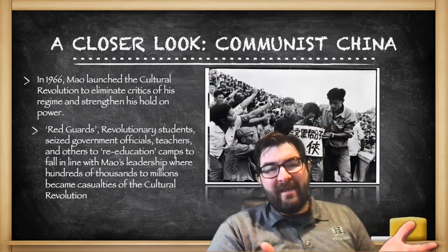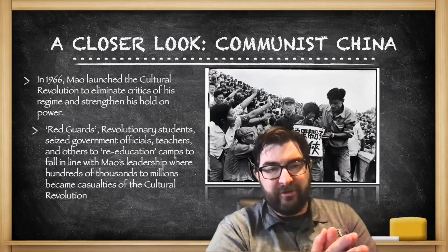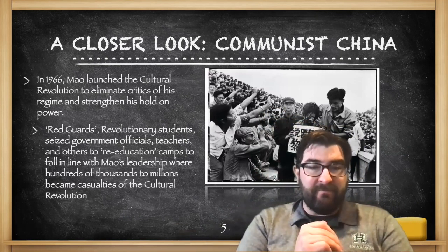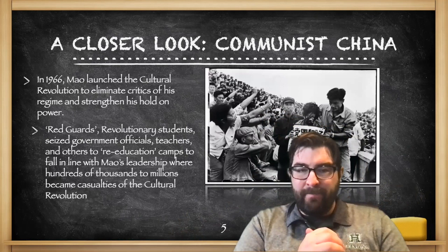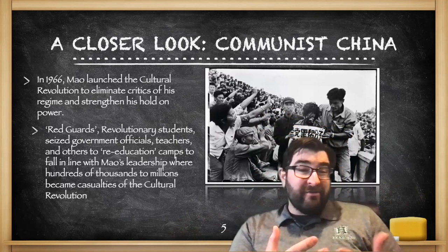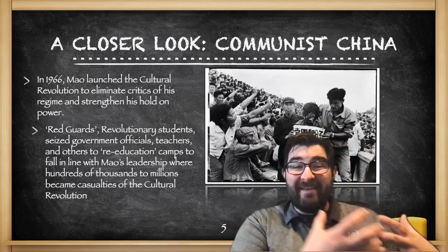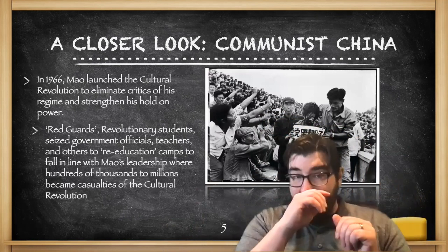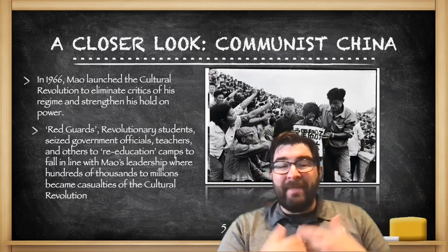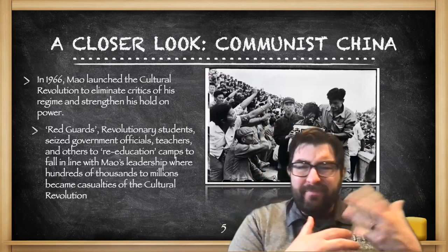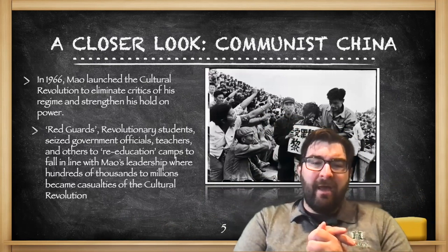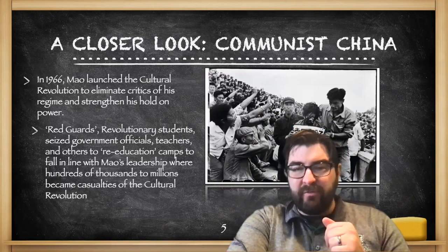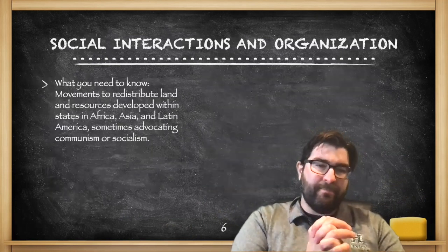In 1966, Mao launched what was known as the Cultural Revolution to eliminate critics of his regime — and there were a lot after the Great Leap Forward — and to strengthen his hold on power. Mao's Red Guards, which were largely revolutionary students, seized government officials, teachers, and others and sent them to re-education camps. When all was said and done, hundreds of thousands were sent to these camps, many were killed and became casualties of this Maoist policy.